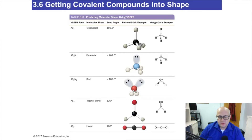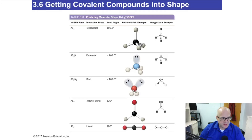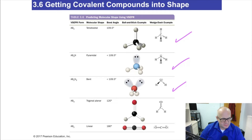Dr. Betts here, and welcome back to Chemistry 1032 instructional videos. I'm here to talk about chapter 3.6 — basically molecular shapes. The only three you have to worry yourself about are the top three. The other two are important, but we're not going to talk about them. So let's learn the first three.